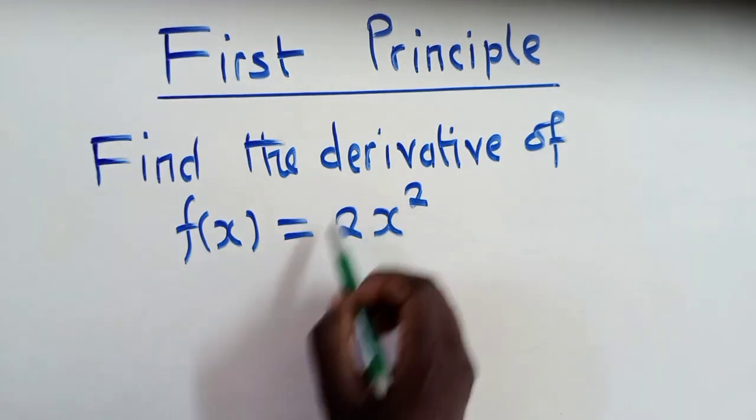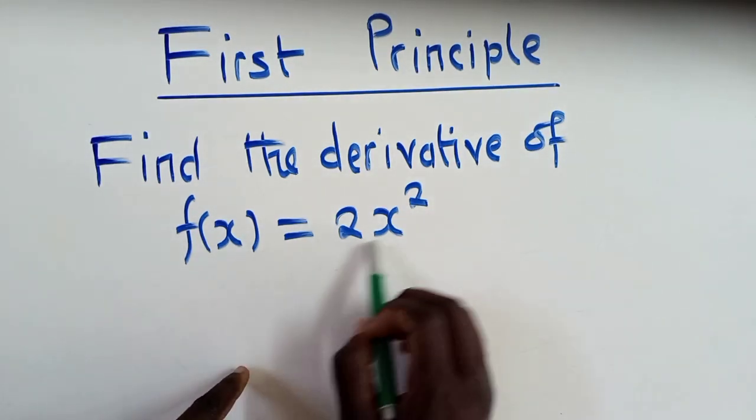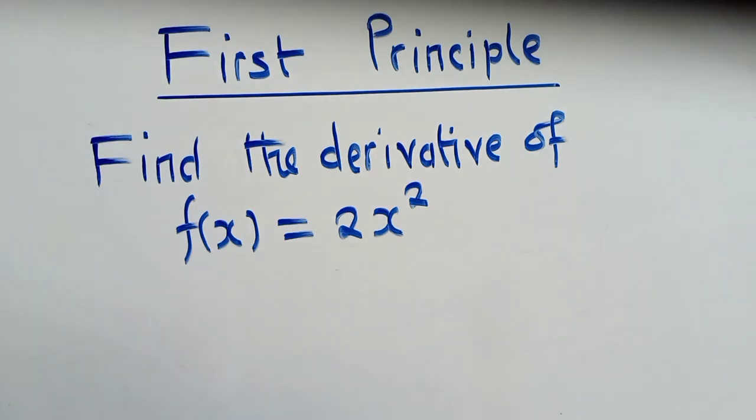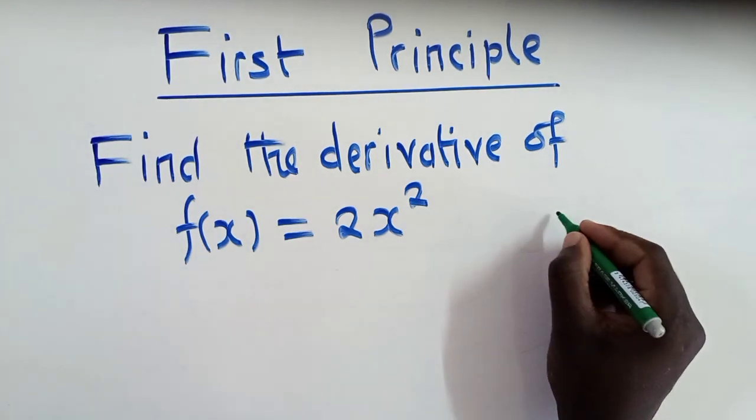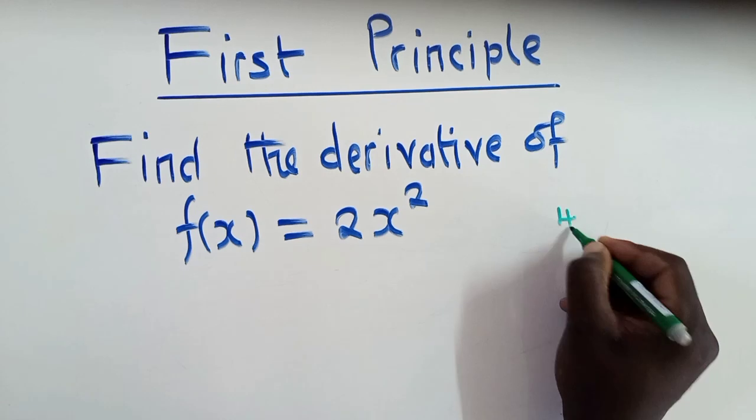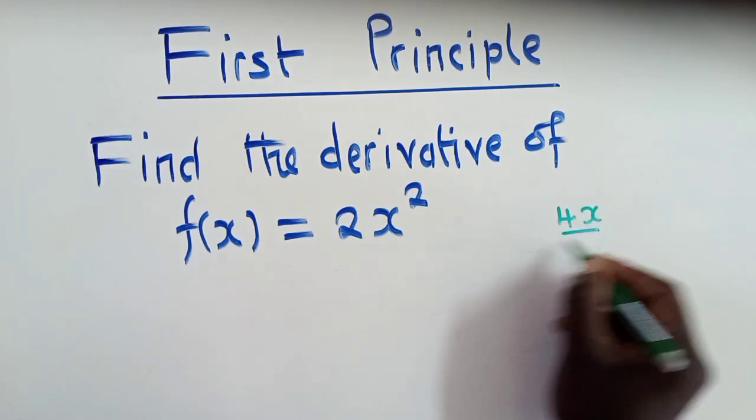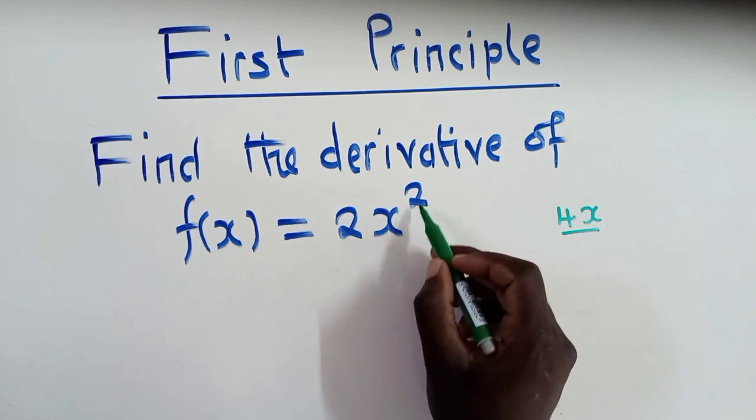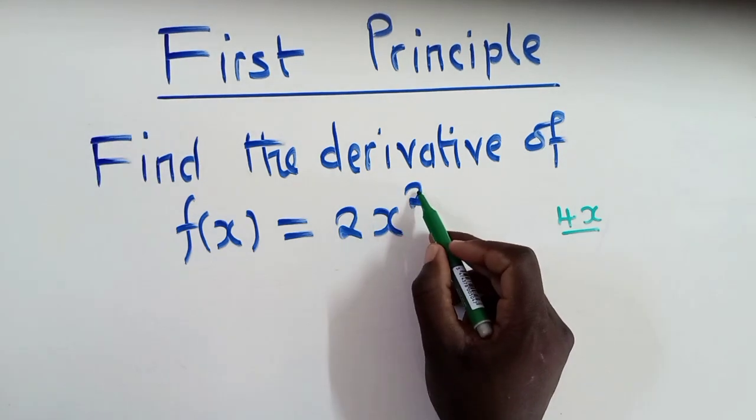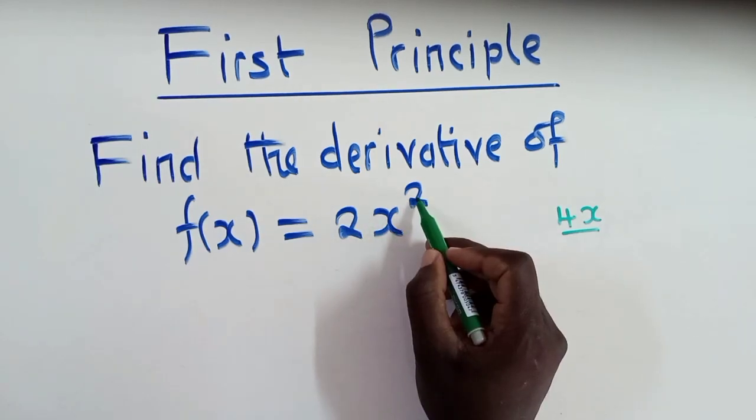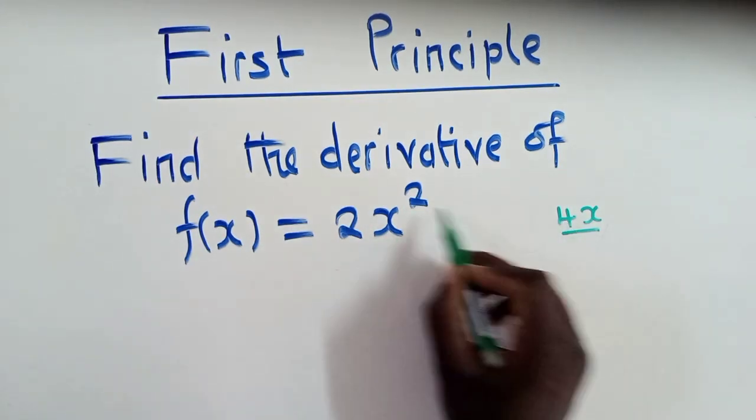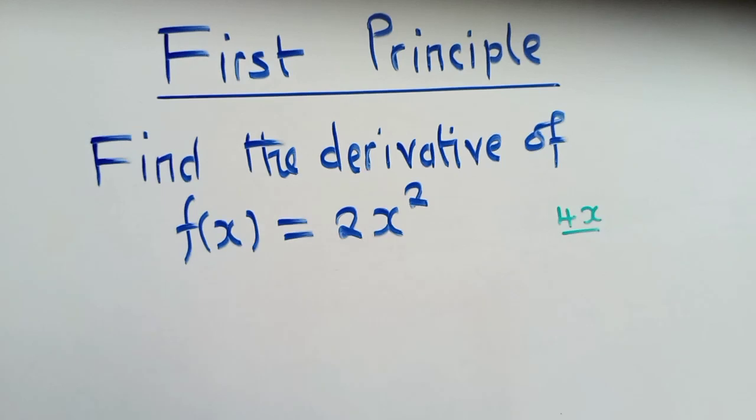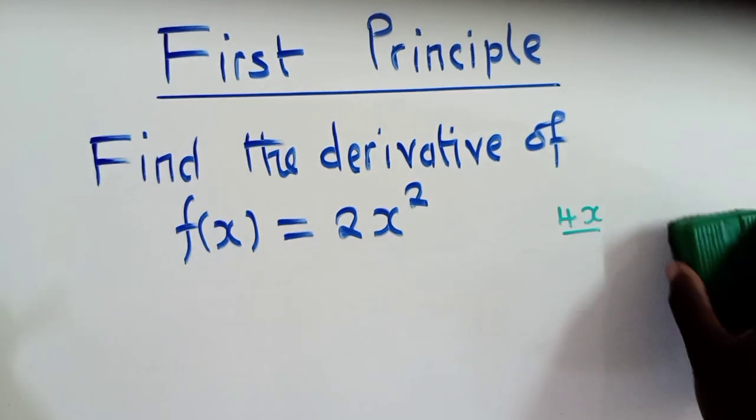So if I ask you to find the derivative of this, you just say the derivative of this is just 4x. To differentiate this, we just say the power which is right here multiplied by the number that is in front. So 2 times 2, that's 4. And to the power here, you subtract 1. That's what we do. So the answer is 4x.